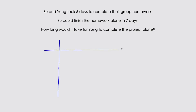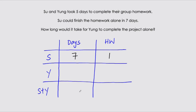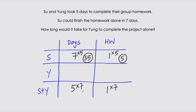We're going to draw the same table again — it's really useful, especially during exams, to put things in perspective. We have columns for days and homework, with rows for Sue, Yang, and Sue-and-Yang together. Sue can finish one homework in seven days. Sue and Yang together need five days to finish the group homework. Finding the common number between five and seven: we multiply Sue's row by five to get 35 days for five homework, and the combined row by seven to get 35 days for seven homework.